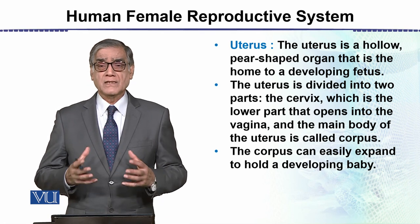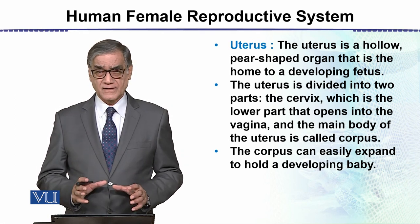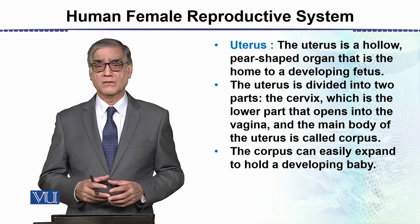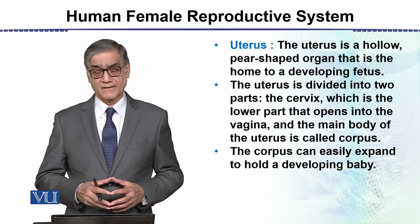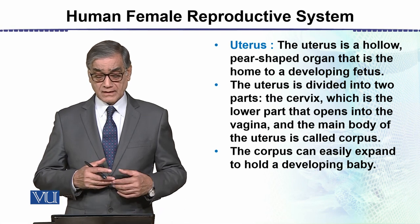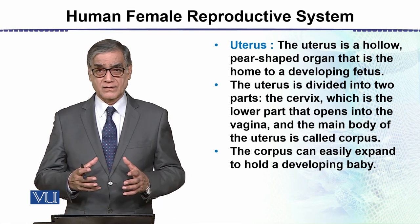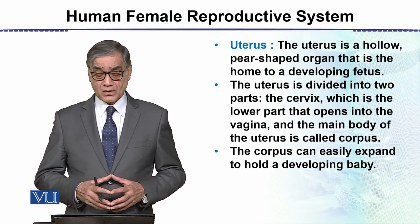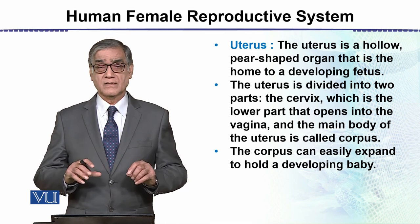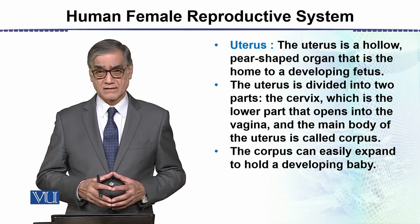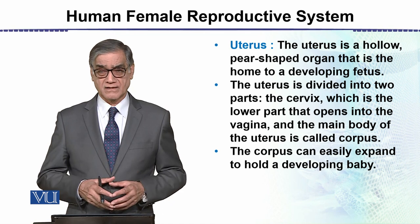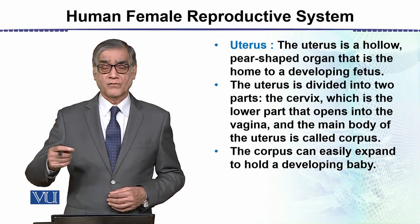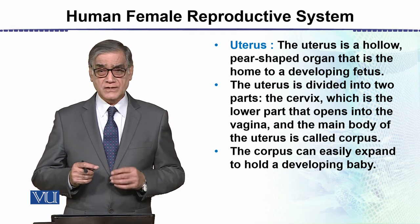The uterus is a pear-shaped, thick-walled structure. One opening of the uterus is the cervix, which opens out to the vagina. The main part of the uterus is called the corpus. It is in the corpus where the development of the child occurs. The fertilized egg travels through the Fallopian tube and then reaches the uterus.